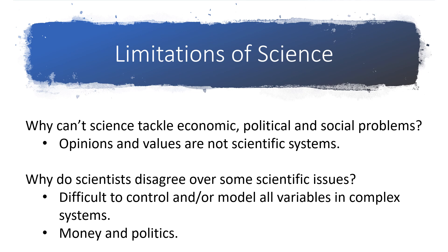Sometimes people get confused because if you put all the faculty members in my department — about 35 people with advanced degrees like PhDs in chemistry — in one room and throw out a scientific issue, you're probably going to get about 60 opinions all strongly argued for. Scientists are human and will disagree. The more complicated or complex the system, the more likely scientists are to disagree, since it's very difficult to control or model all the variables in complex systems. Money and politics also play a huge role, since politics control the purse strings and most science is funded by government money.